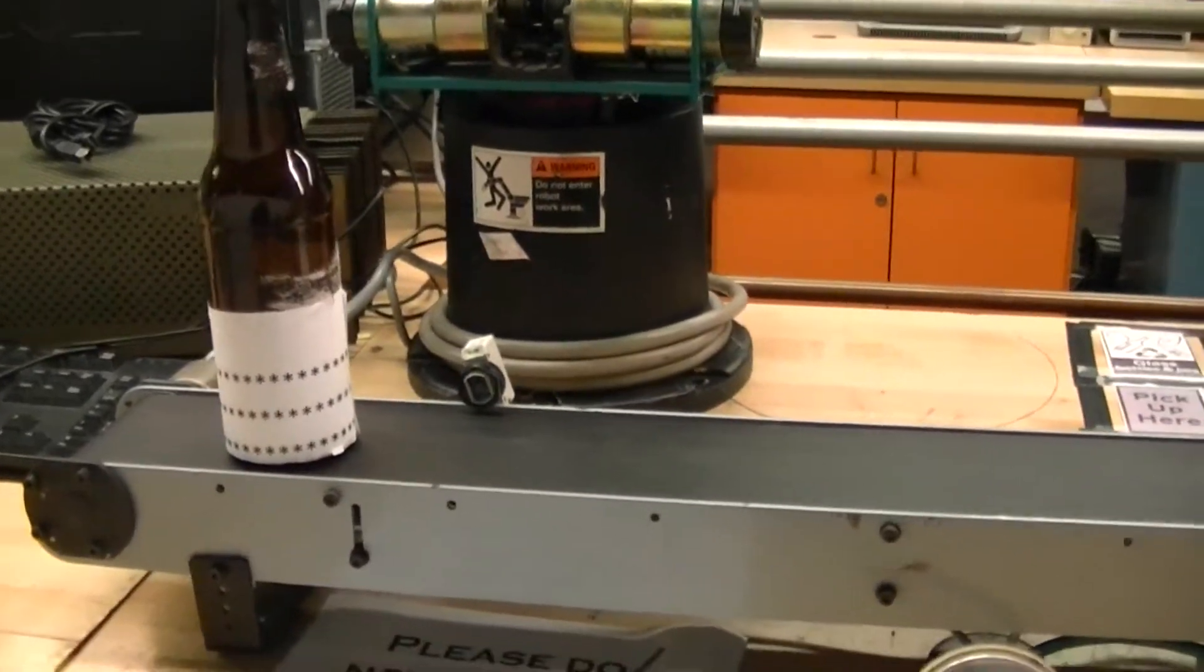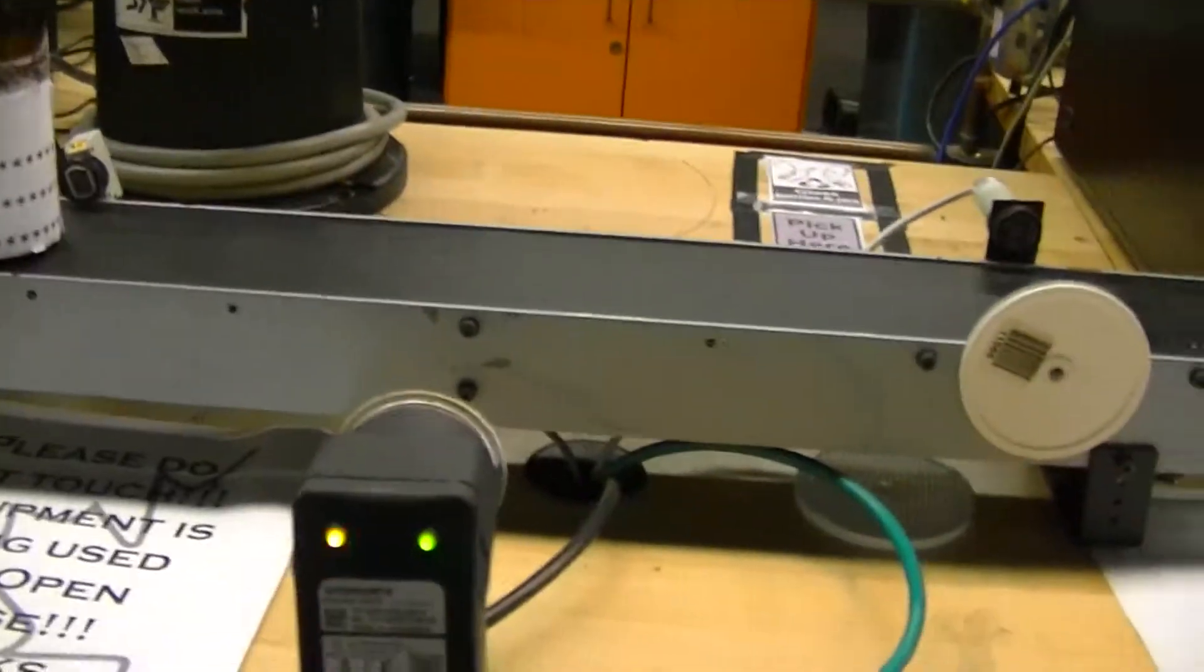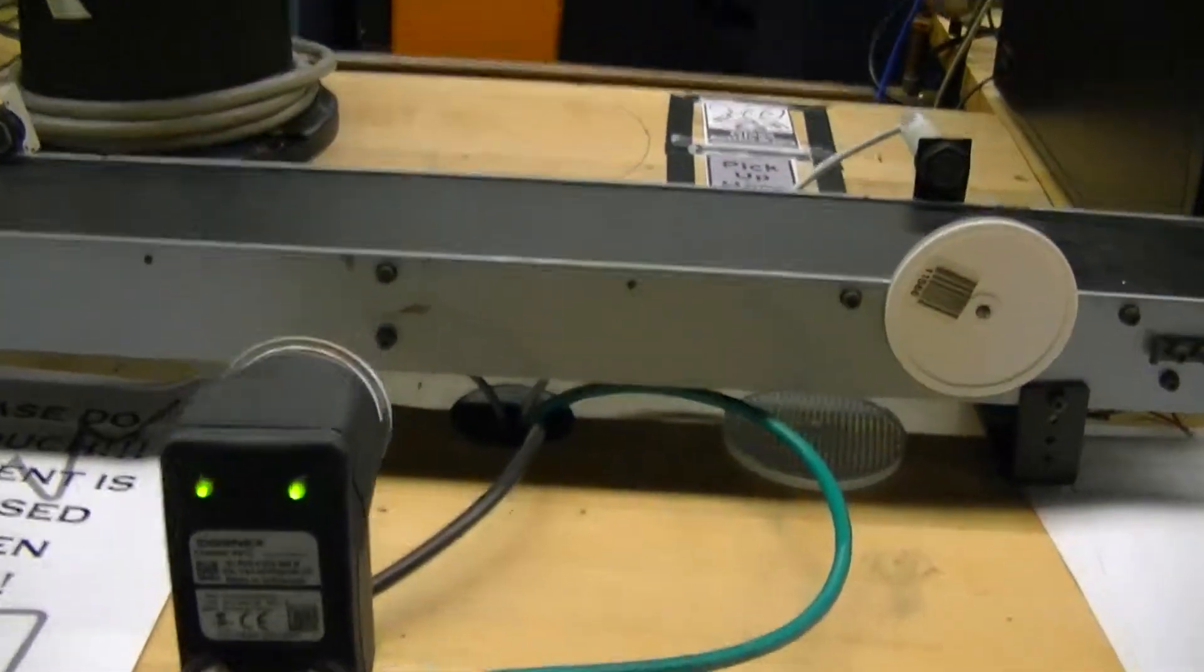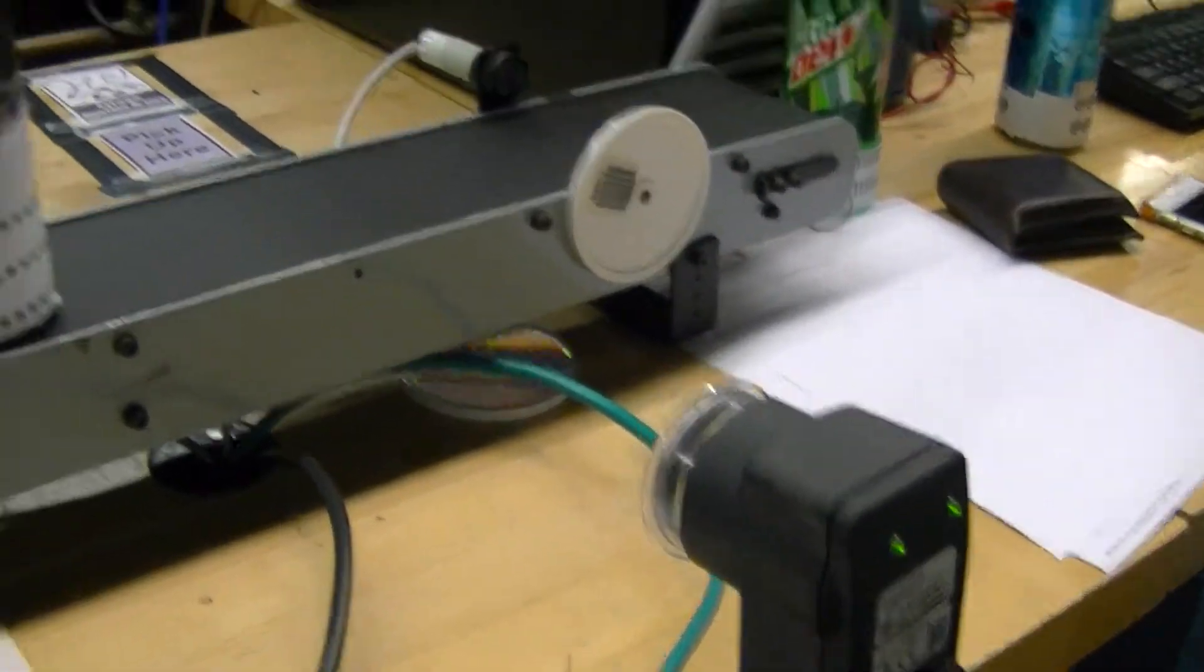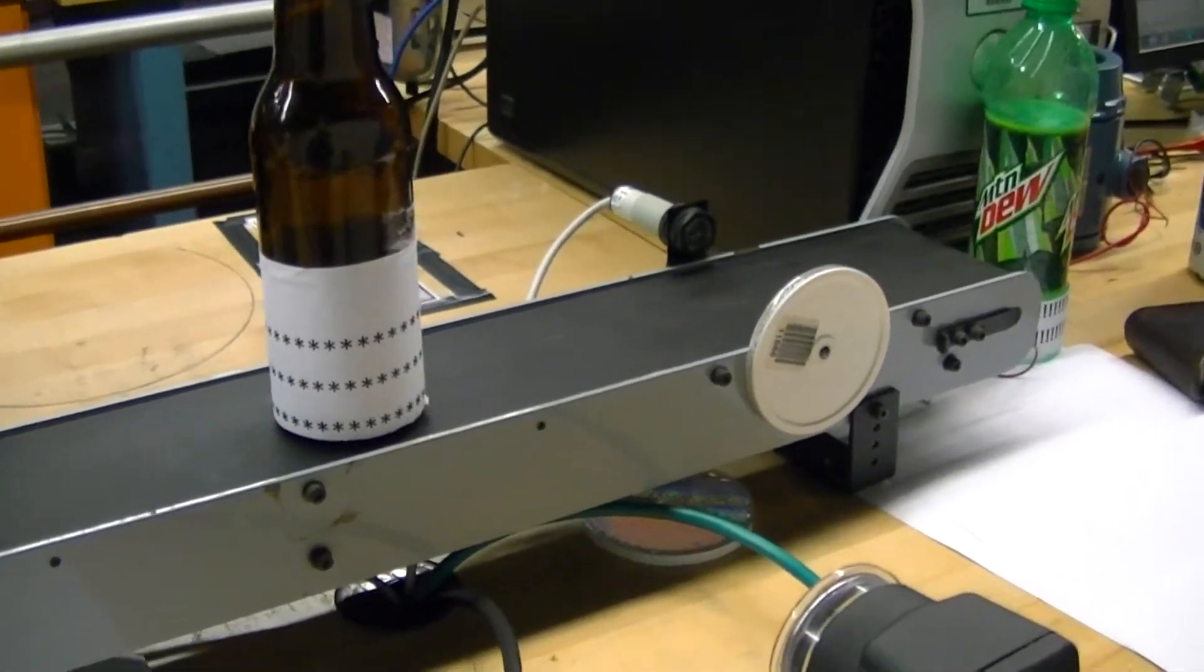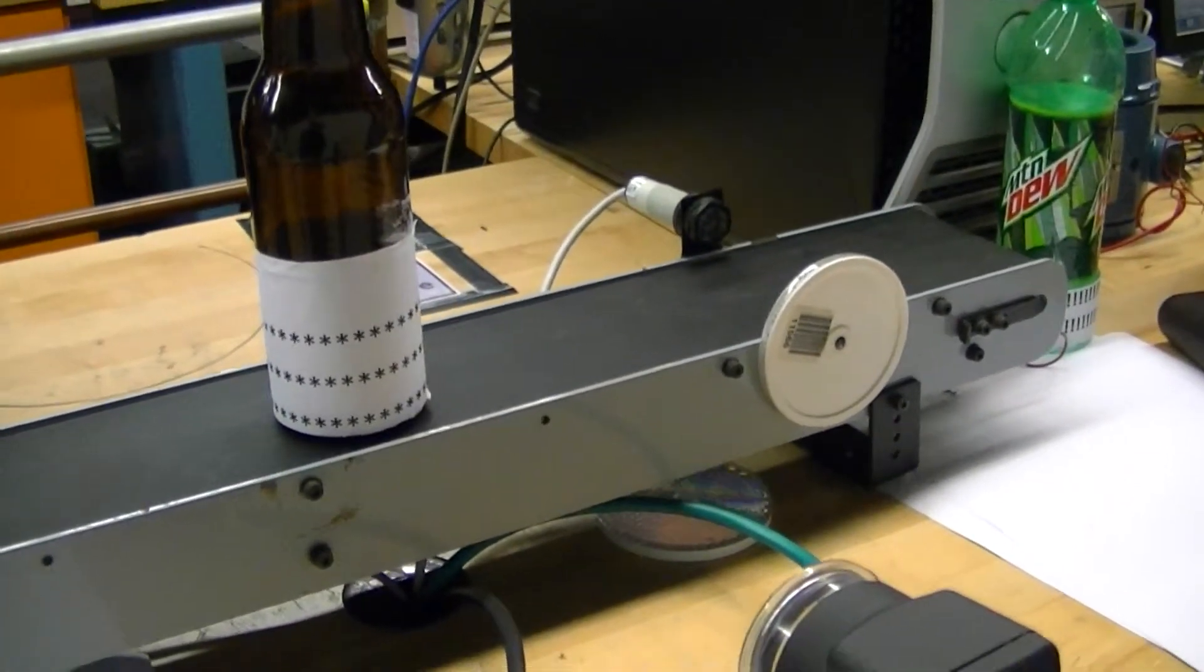And the idea is that the camera, when it goes in front of the camera, which is right here, this is the camera. The goal is that it should be able to differentiate glass, plastic, or aluminum.